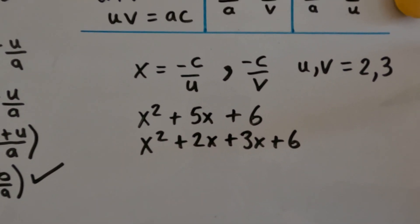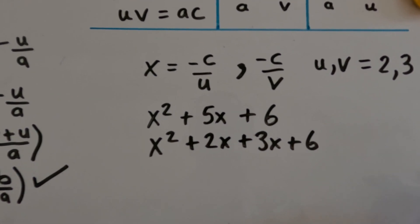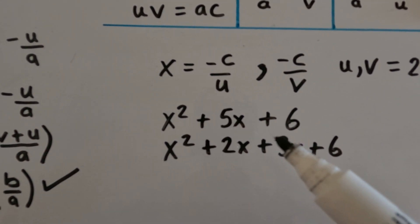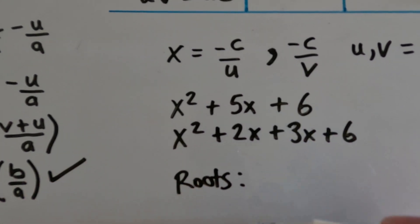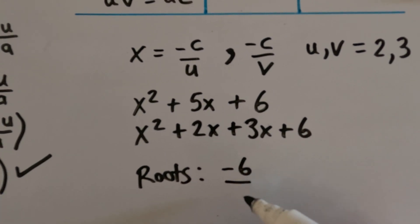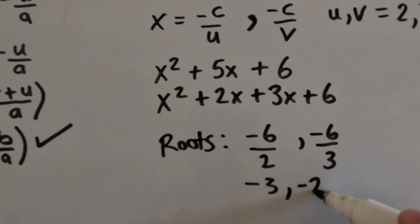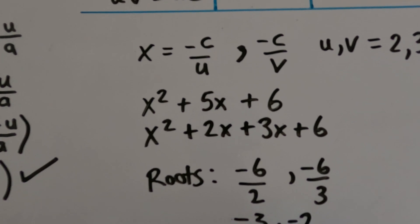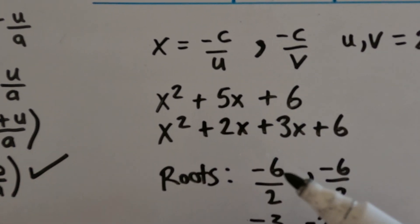So I can write the answer down immediately. Since one root is minus c over u and the other is minus c over v, and c is 6, the roots are minus 6 over 2 and minus 6 over 3, giving minus 3 and minus 2. The product of these roots is 6, which is c over a — that checks out. The sum of the roots is minus 3 plus minus 2, which is minus 5, which is minus b over a since b over a is 5. That checks out too.